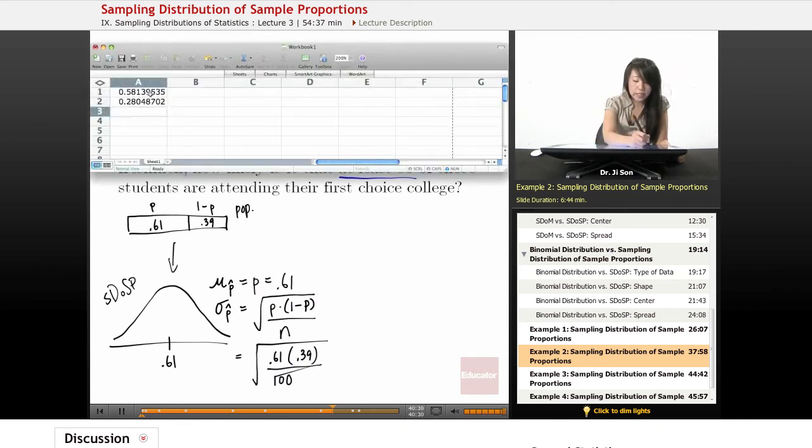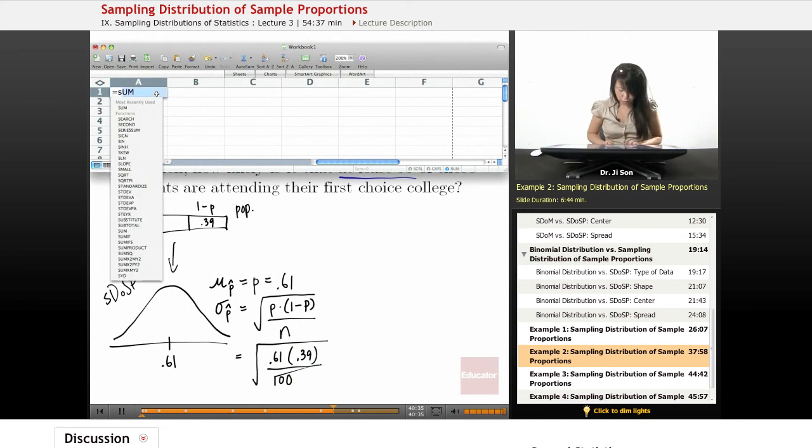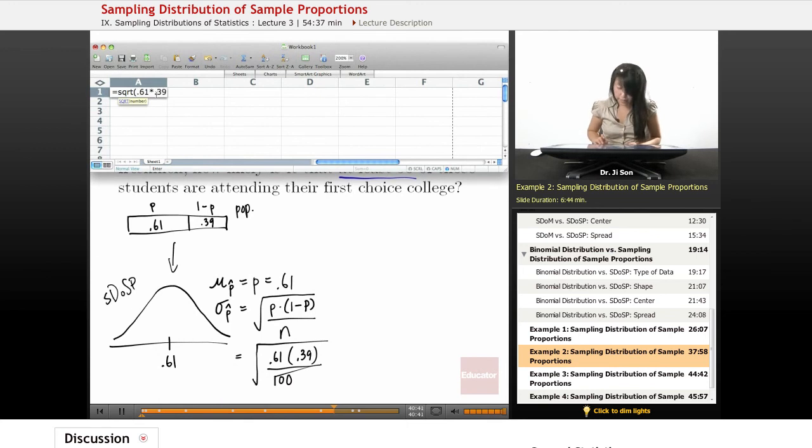And I'll just look that up here. So square root of 0.61 times 0.39 divided by 100, so that's about 0.0488.